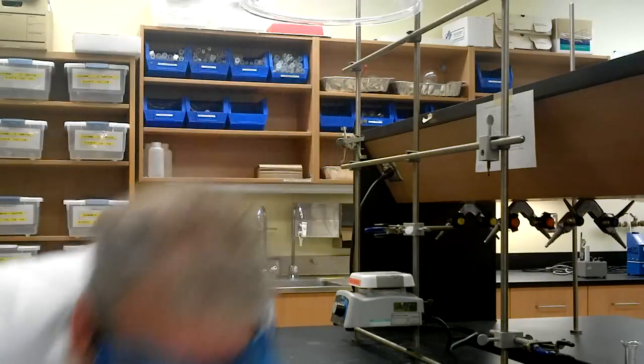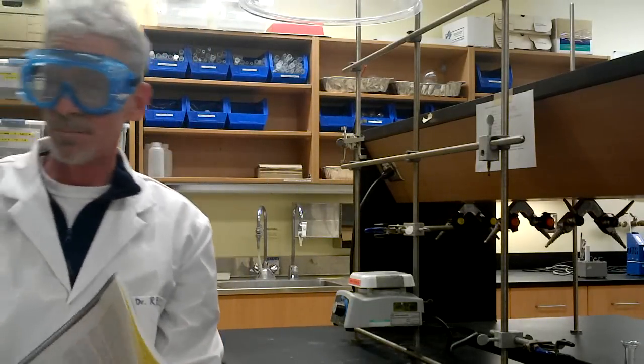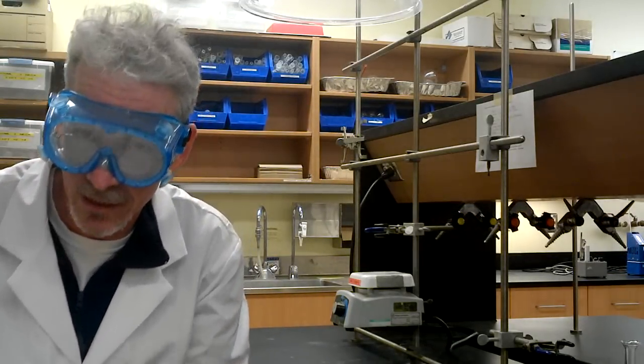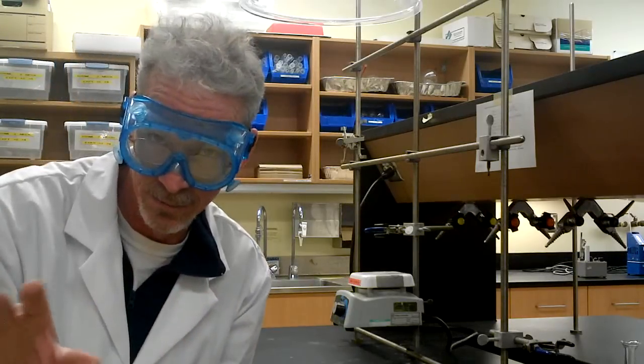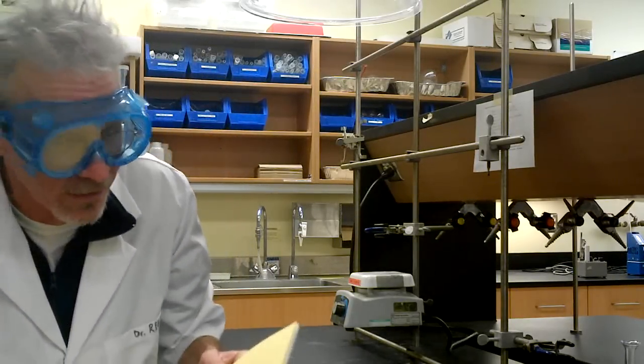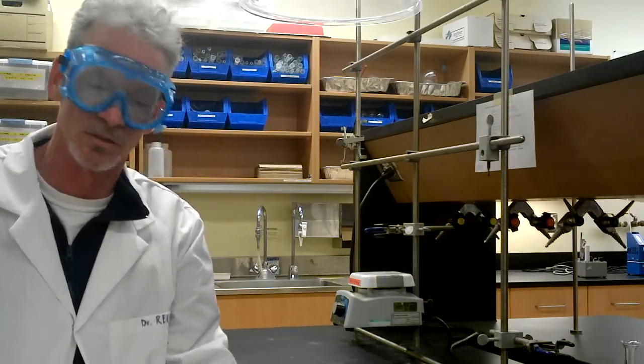Welcome to experiment 7, the nitration of methylbenzoate. Benzoate being an ester, it's the methyl ester of benzoic acid. Acids become -oate when they're esters. I don't know why, but that's the way we do it.